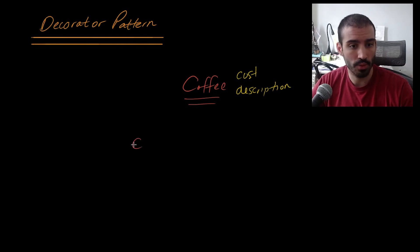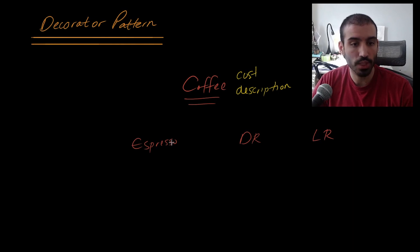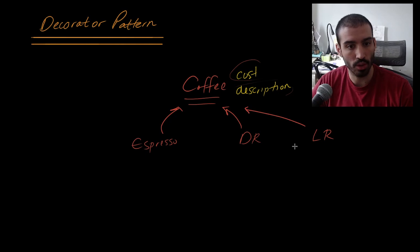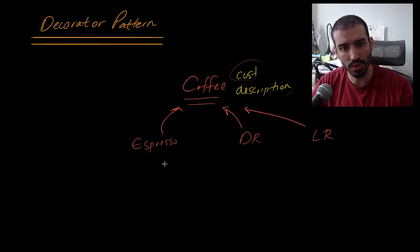So we would have espresso, dark roast, and light roast as subclasses. Each one extends coffee and overrides the cost and description function. So far this is making sense — we just have subclass types for each drink and they override the functionality for each of those attributes.